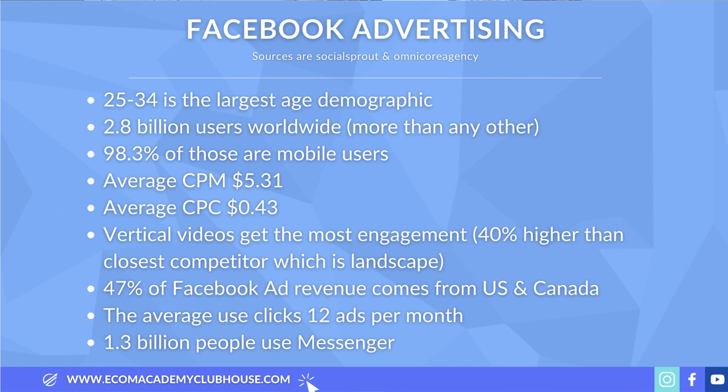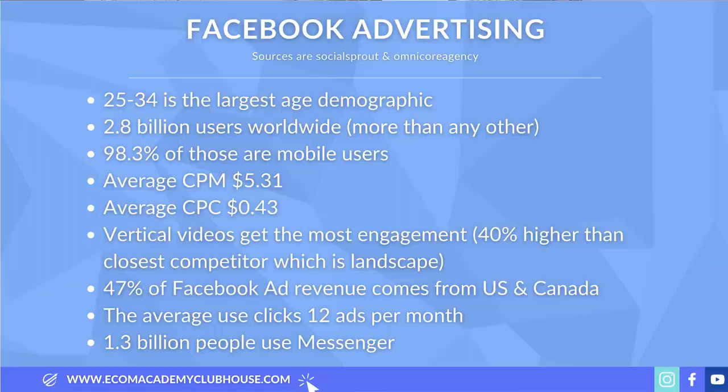98.3% of those 2.8 billion users are mobile users, which means that everything we do on our business needs to be optimized towards the mobile user. The average CPM across all placements on Facebook is around $5.50, though personally I find it to be almost triple this — somewhere between 10 and 15 pounds — depending on the audience you're targeting and how successful your ad is.